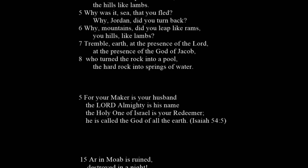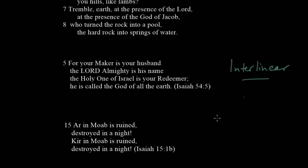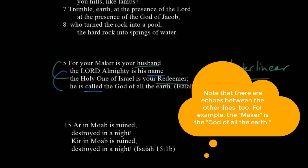Another example of synonymous parallelism comes from Isaiah 54, verse 5 — a slight variation called interlinear parallelism. Here we read: 'For your maker is your husband,' and that line doesn't get repeated until the third line: 'The Holy One of Israel is your redeemer.' Husband and redeemer are synonymous terms, and maker and the Holy One of Israel echo each other. The alternate lines — two and four — are about the name of God. So interlinear means something interrupts the flow, but the corresponding lines are still synonymous with each other.